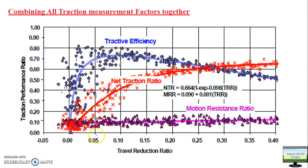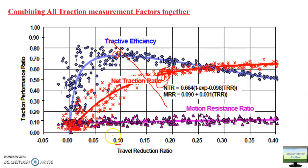You get maximum tractor efficiency at around 10% slip (0.10 slip), which for this particular tractor is around 72 to 73%. You get maximum traction ratio at around 18% slip. So your optimum working zone is where you can get better tractor efficiency and better traction - operating your tractor in the slip zone of 10% to 18-20%.